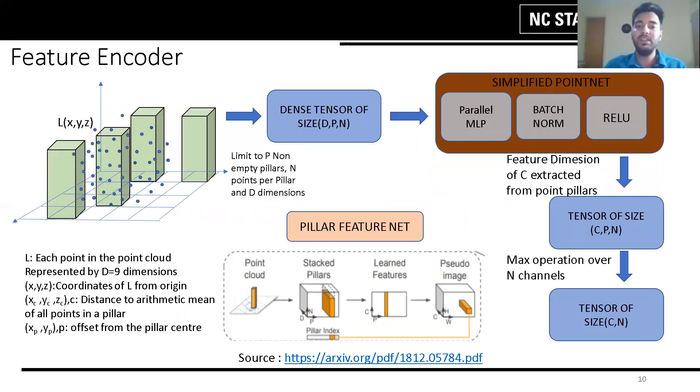The feature encoder converts the raw point cloud to a stacked pillar tensor and the pillar index tensor. To do so, we denote a point L in a point cloud with coordinates XYZ and reflectance R. The point cloud is first discretized into an evenly spaced grid in the XY plane creating a set of pillars.